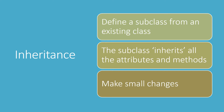Inheritance means that once we've created a class, we can create new classes that inherit all the attributes and methods of our original class. You then make some little changes which create this new class, but the amount of work is kept to an absolute minimum because the only thing that you have to write are the small features that have altered from the original class.